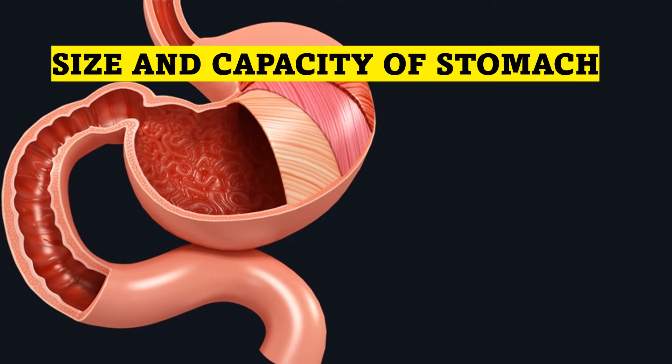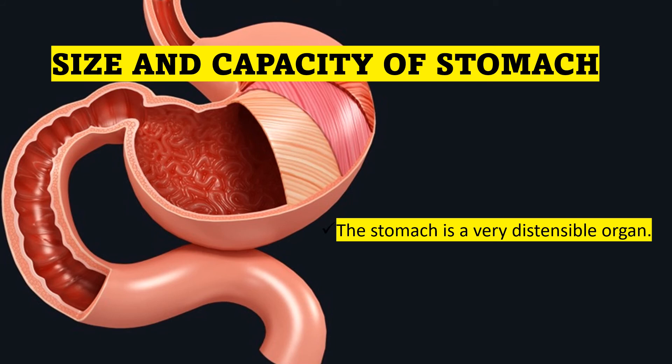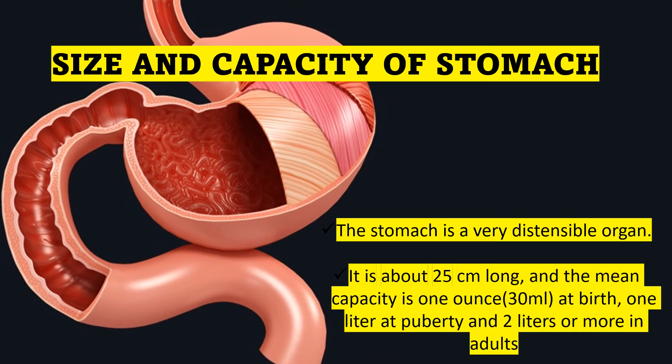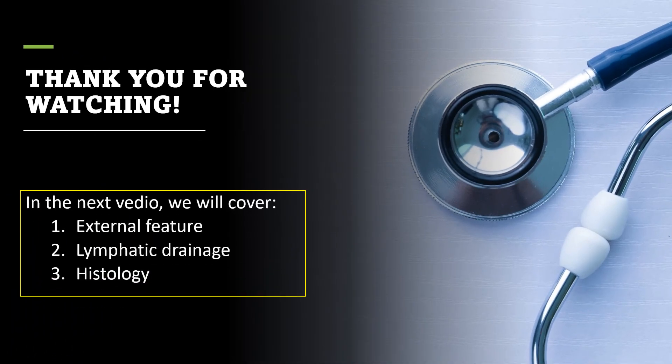The stomach is a very distensible organ. It is about 25 centimeters long. The mean capacity is one ounce, equal to 30 ml at birth, one liter or 1000 ml at puberty, and two liters or more in adults.